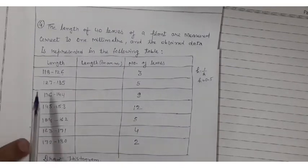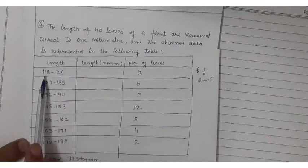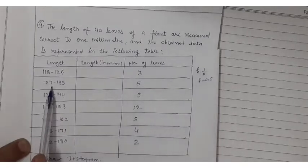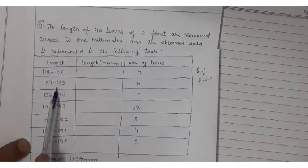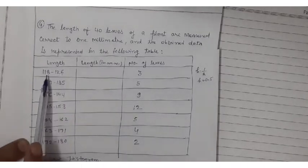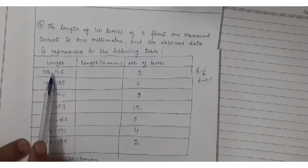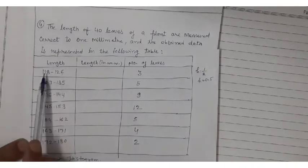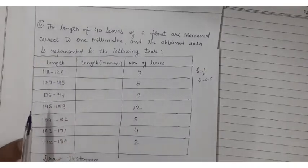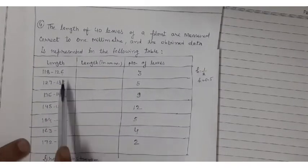First of all, just you see, length is given to you in millimeters. In which form? This is 118 to 126, and here 127 is given to you. This is given to you in inclusive form. Why inclusive form? 118 to 126 - both are included in this interval. So you have to convert this table in exclusive form, we can say in continuous form.